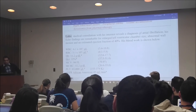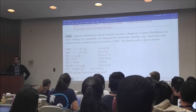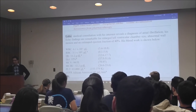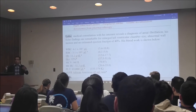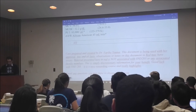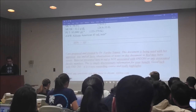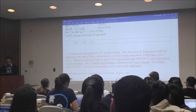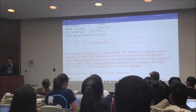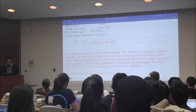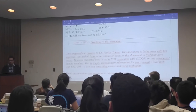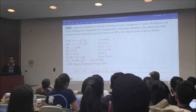Echo findings are remarkable for an enlarged left ventricular chamber size, abnormal wall motion, and an estimated ejection fraction of 40%. What does that indicate? Hypertension leading to heart failure. What is the rough normal range for ejection fraction? Look at this guy — 40%. That's why he's in heart failure.